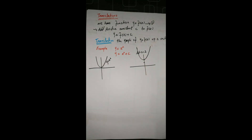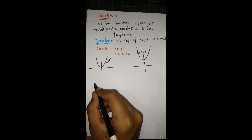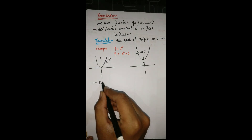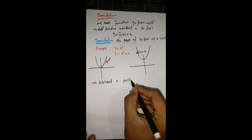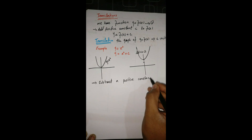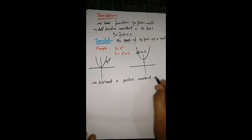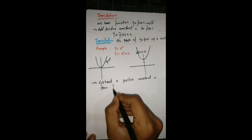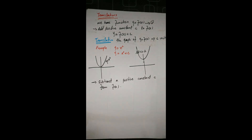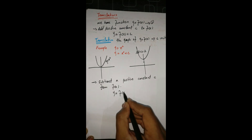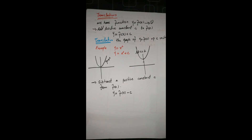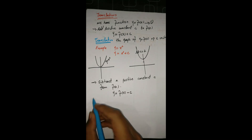When we subtract a positive constant c from f(x), we have the function y = f(x) and subtracting c gives y = f(x) - c. What effect is imposed on our graph? What will be the translation of our graph?